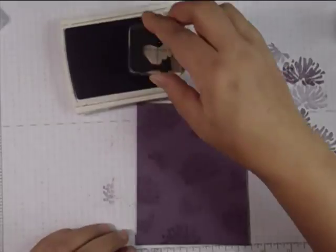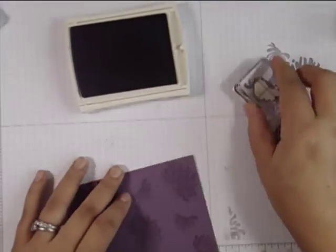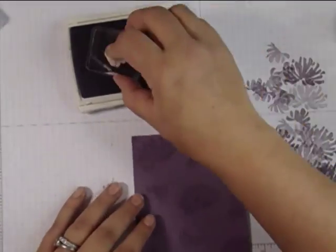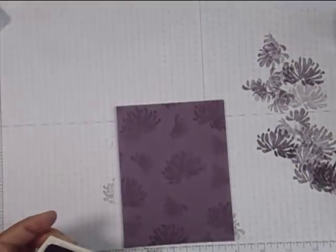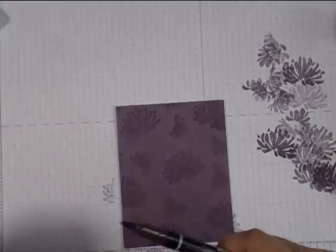Maybe Simon Says Stamp has it or one of the other big stores has it. And I'm spritzing that. And then after I stamp this I'm going to spritz this as well. I'm just creating my own background here. And I'm stamping off so that I don't have a really dark background. I want it to really be in the background.